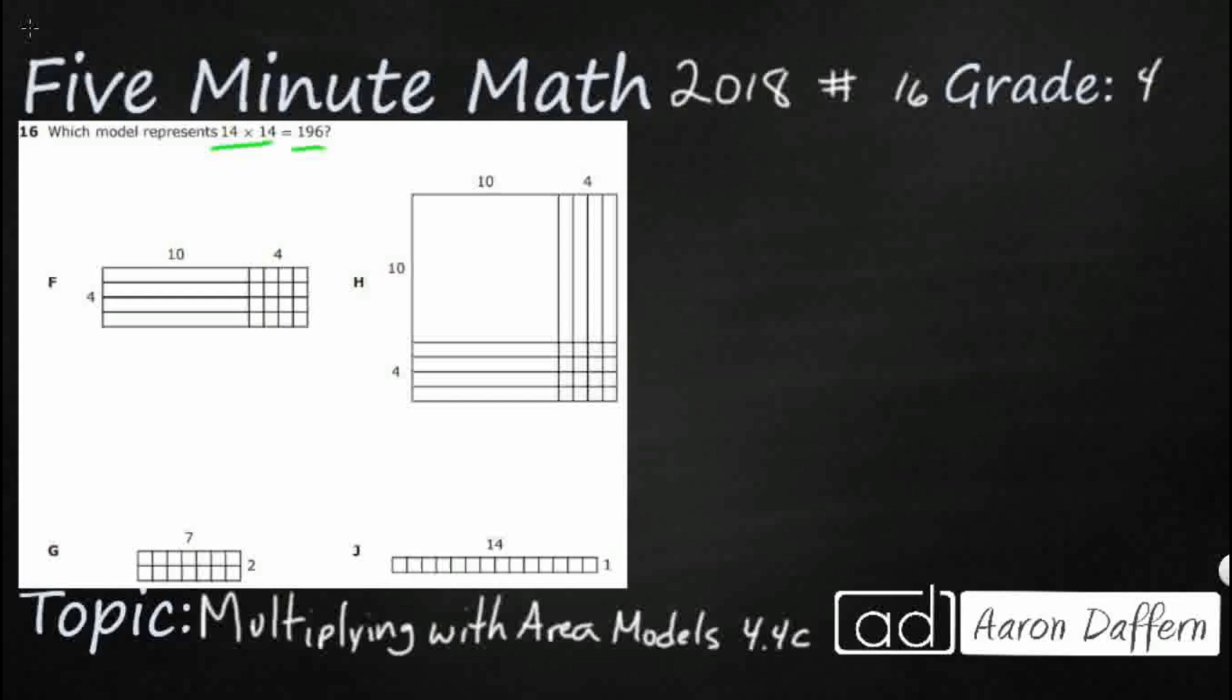So take a look at what we have here. We've got an area model, and it's got two numbers on the top. So we've got 10 and 4. You notice our 10 are really, really long. And then we've got 4, and that's just our 4 little boxes.